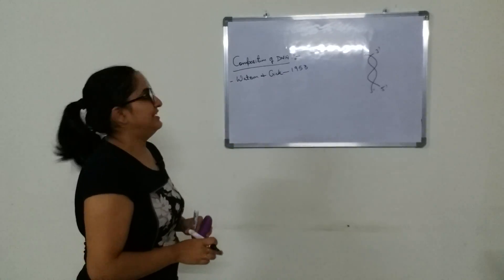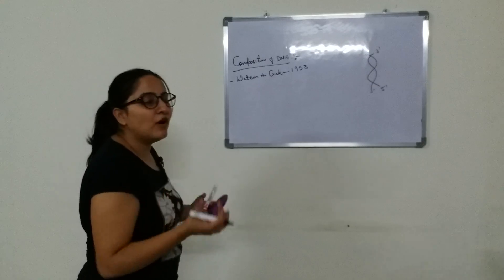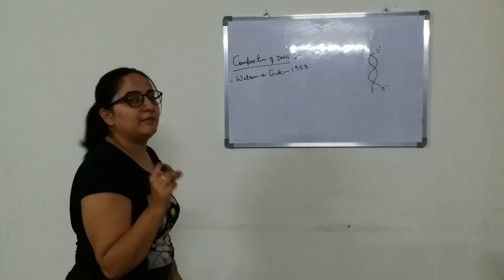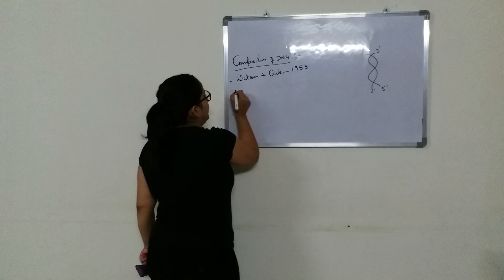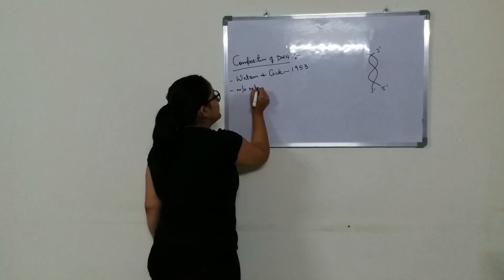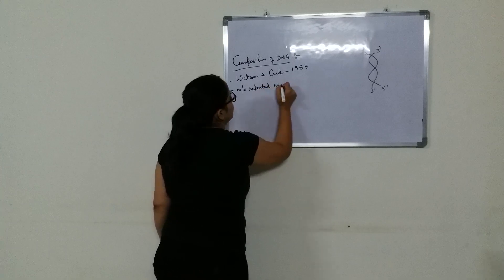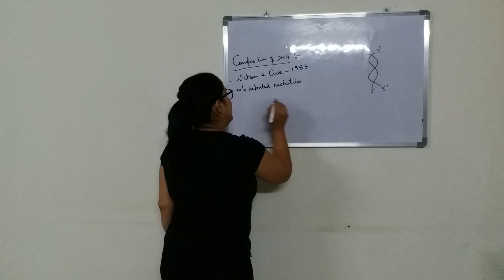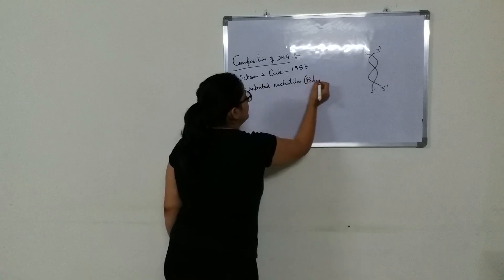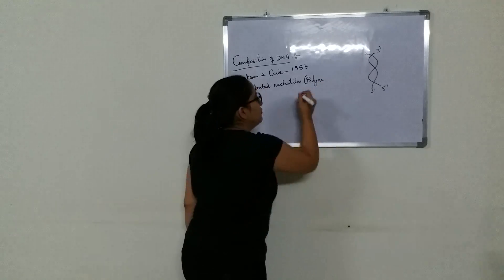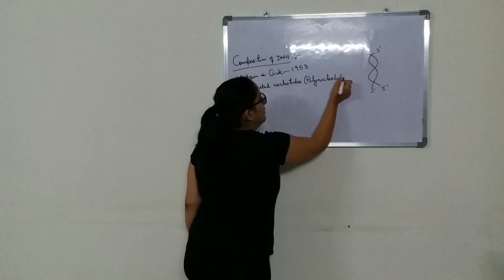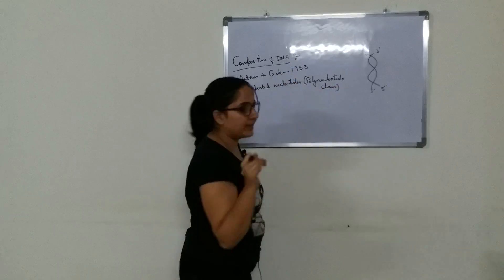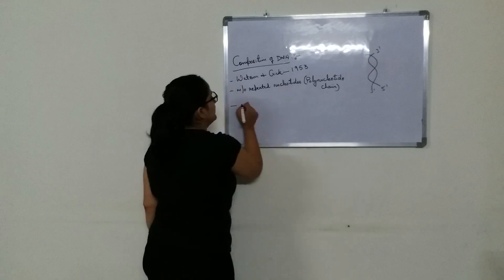Coming to the composition of DNA — what is DNA made up of? The backbone of DNA is made up of a repeated number of nucleotides. We can call it a polynucleotide chain. So we can say that DNA is a polynucleotide chain. Now, what is this nucleotide?